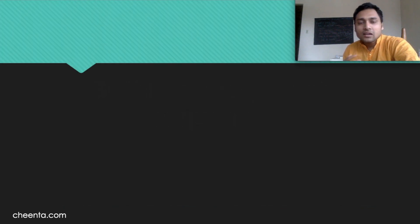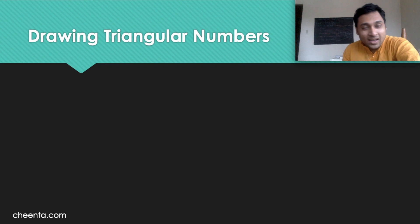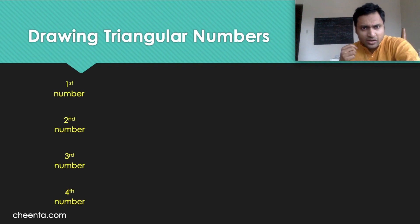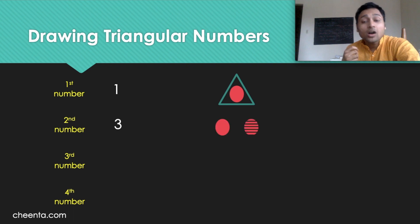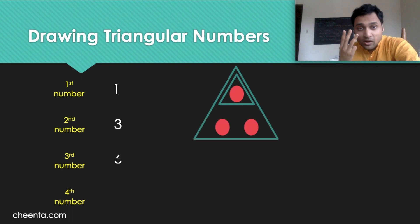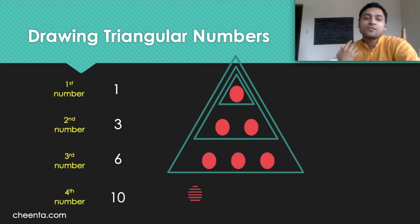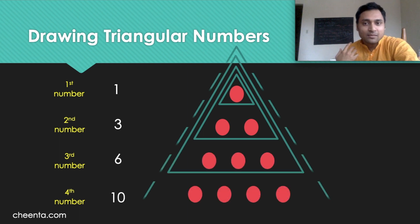Now that we understand this, let's have a second look at the triangular numbers, a little more quickly. The first triangular number is one blob; the second, which is 3, has three blobs; the third, which is 6, has six blobs; and the fourth, which is 10, has ten blobs.